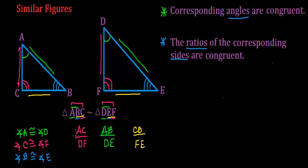It says here that the ratios are congruent, and notice that what I've made here are ratios made up of the corresponding sides. AC is the numerator and DF, the corresponding side, is the denominator. And it says that these ratios of the corresponding sides are equal — they have the same measure. So I write an equal sign between these ratios: AC over DF equals AB over DE equals CB over FE. And that's basically what similar figures are. In the next video I'll give you two figures with numbers so that we can see these properties at work. See you in the next video.